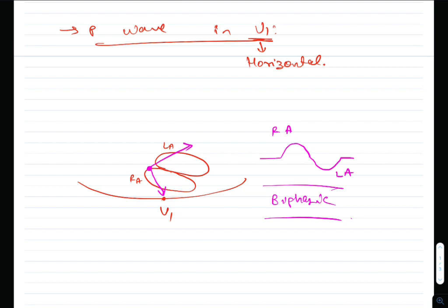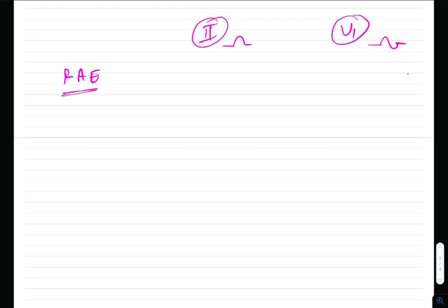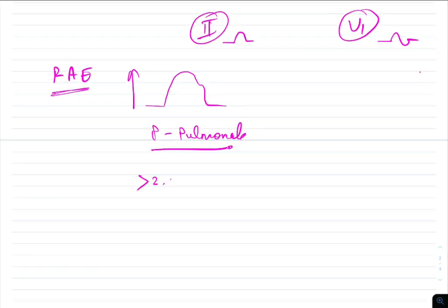With that concept in mind, let's study P wave changes in lead 2 and V1 in right and left atrial enlargements. In right atrial enlargement, the initial half of the P wave — due to the right atrium — is enlarged, followed by a normal distal half. This increased amplitude is known as P pulmonale, and is diagnosed when the amplitude is more than 2.5 mV, or more than 2.5 small boxes.